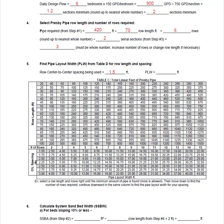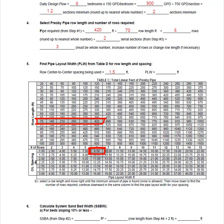We are now going to determine the dimensions of our field, starting with the pipe layout width. We will locate our row length — 70 feet — and move to the right until we find the total amount of pipe required, 420 feet. Now we move down this column until we reach the row indicating how many rows are required — six as previously determined. Then we continue down until we are in line with one and a half foot center-to-center spacing. Where our chosen spacing and our row length column intersect, we find our pipe layout width of eight and a half feet.